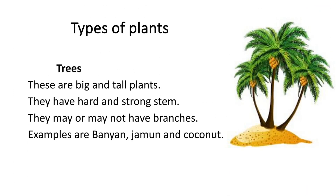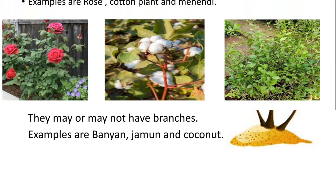Trees: these are big and tall plants. They have a hard and strong stem. They may or may not have branches. Examples are banyan, jamun and coconut.